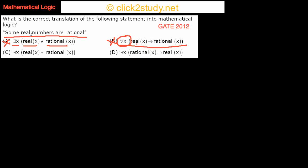We need to translate only the case that some real numbers are rational. Option C says: there exists X such that Real(X) and Rational(X). This means there is at least one X which is both real and rational — which is exactly the same as saying 'some real numbers are rational.' So option C is correct.